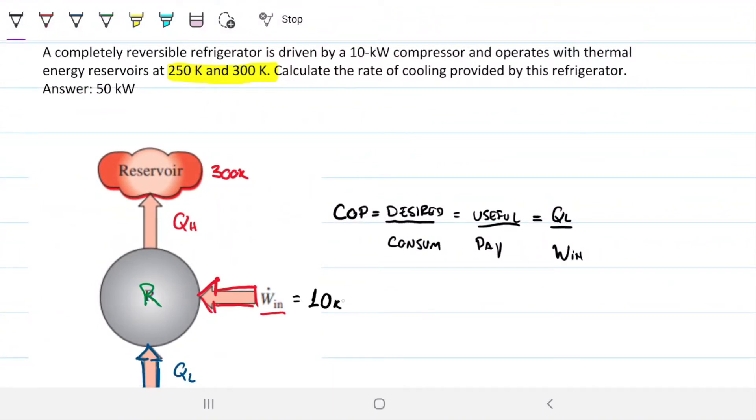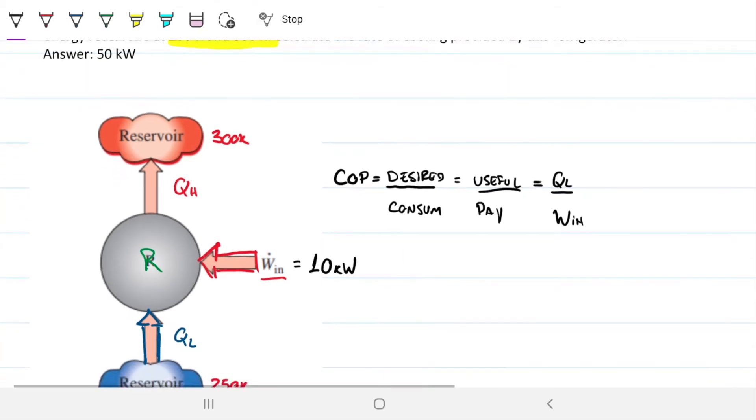We need to put 10 kilowatts. So 10 kilowatts is what's being inputted into the system. We want to know what's the rate of cooling provided, so what we want to know is precisely what is QL.